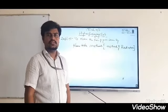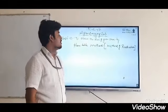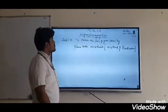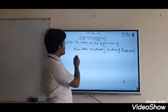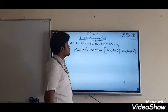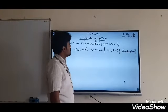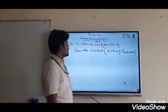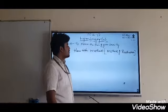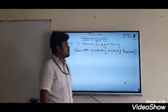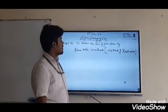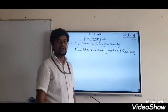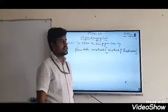Experiment number 1 in Higher Surveying is: the name of the experiment is to determine the plan of a given area by using the plane table instrument. This method is also called the method of radiation.